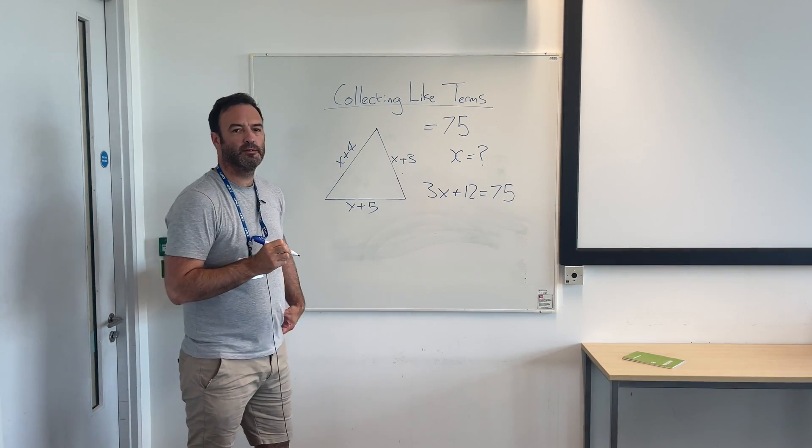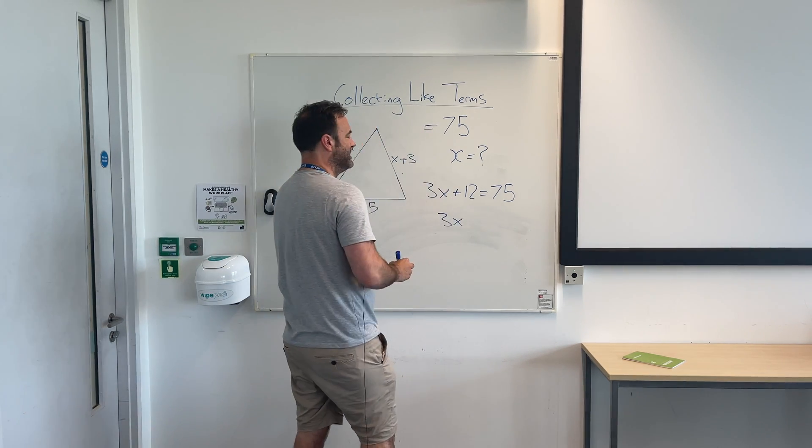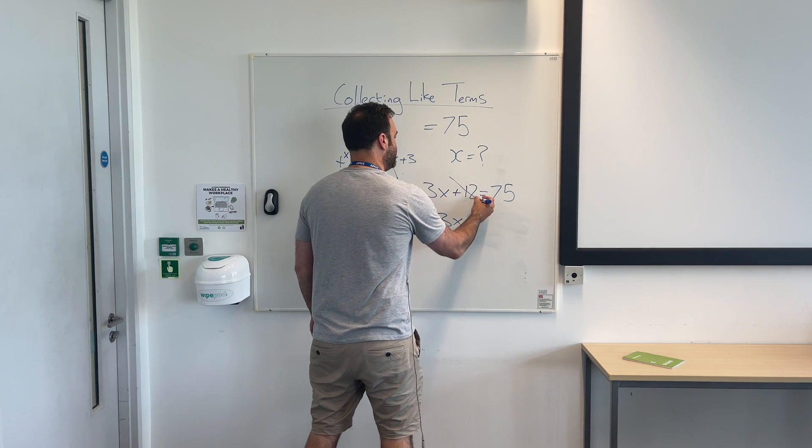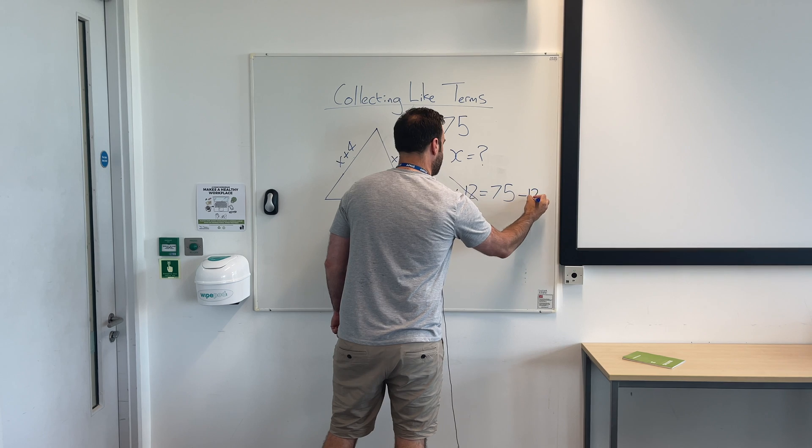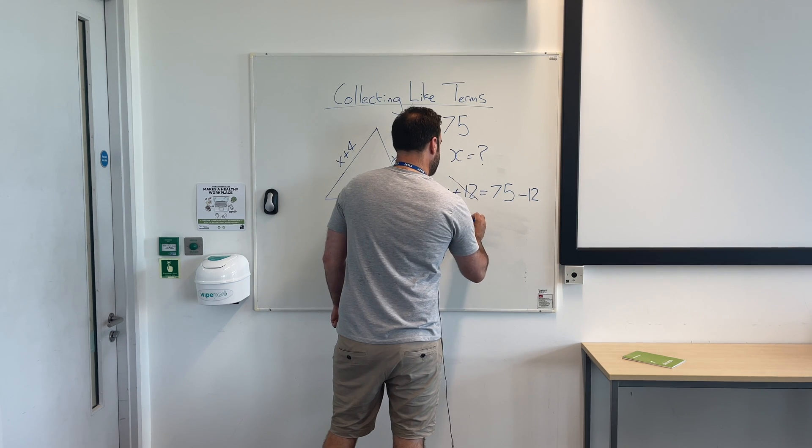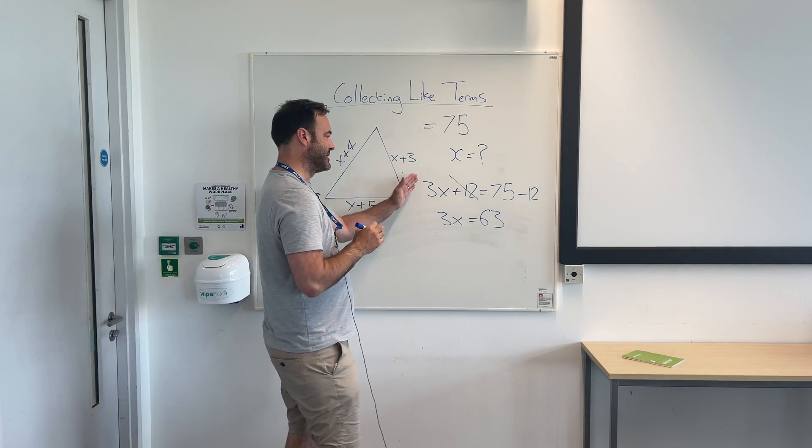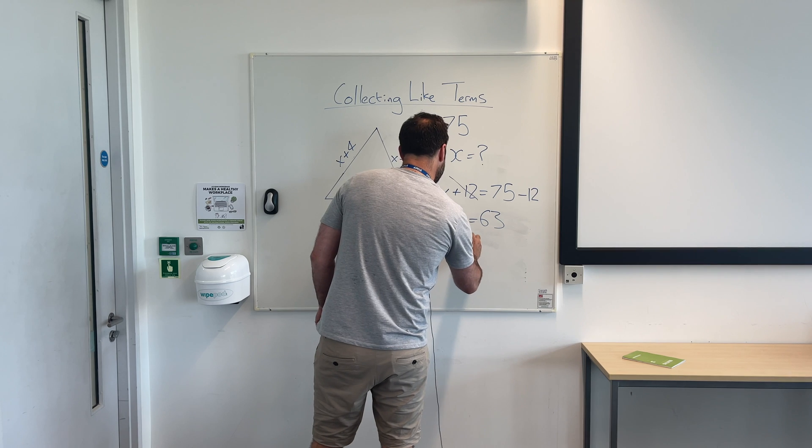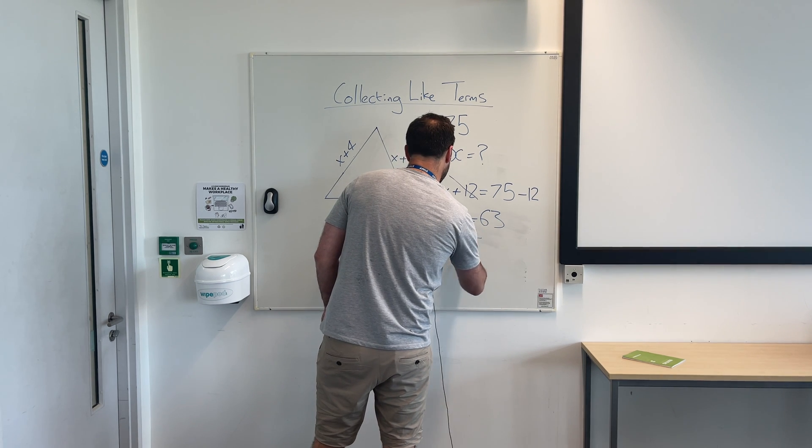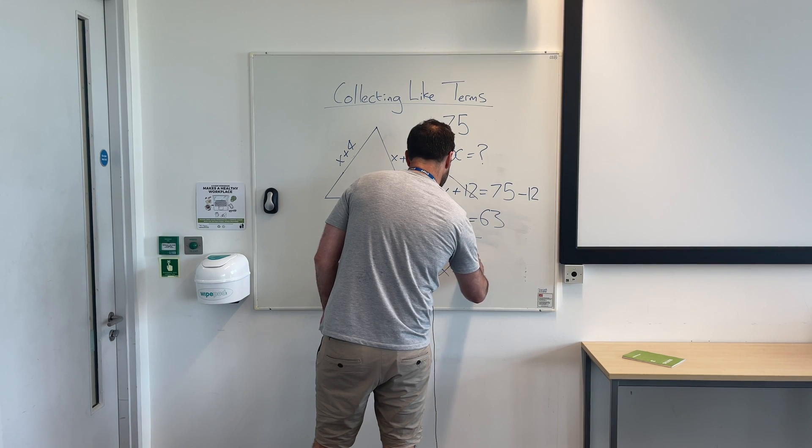So what it's actually saying is this: 3x plus 12 equals 75. Well, how can we find out what 3x is? We can eliminate this from this side. If we go over the equal sign, we take 3x equals 63. It's the same thing. Then we just do 63 divided by 3 and x equals 21.